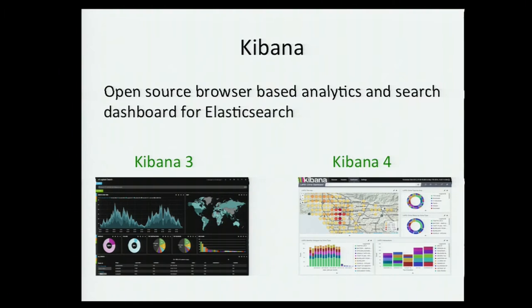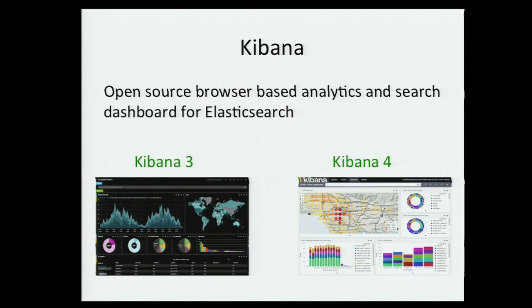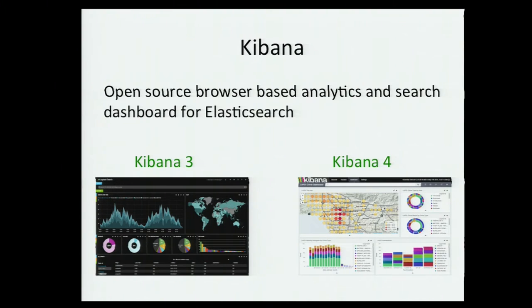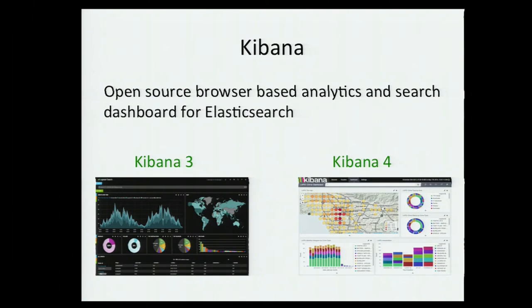Kibana is basically how you're going to search everything. In Splunk, you have your Splunk interface — this is kind of like that. Kibana 3 and 4 are quite different. Kibana 3 is kind of just an interface to curl, where Kibana 4 is a whole Java app. There are things in Kibana 3 that Kibana 4 can't do. One of the biggest things I don't like about Kibana 4 is that you can't edit your filters after you create them. I just run them both.